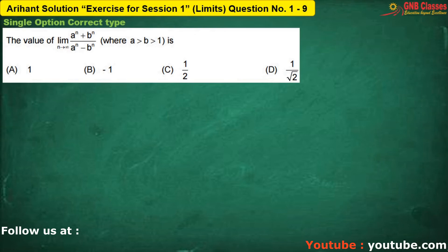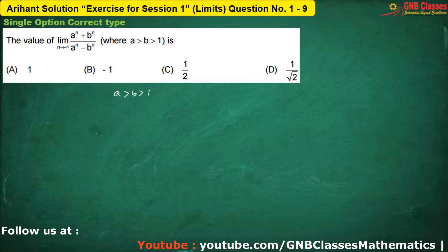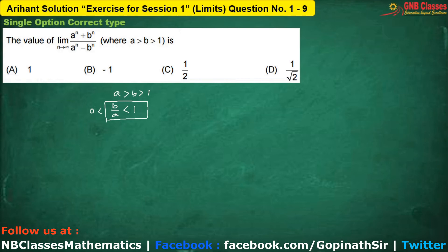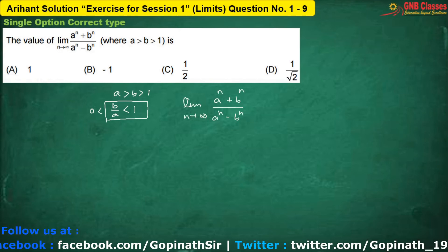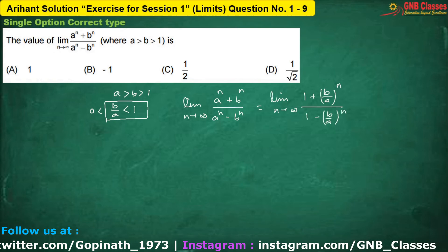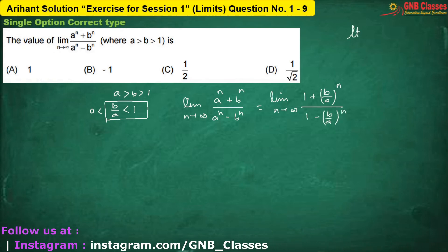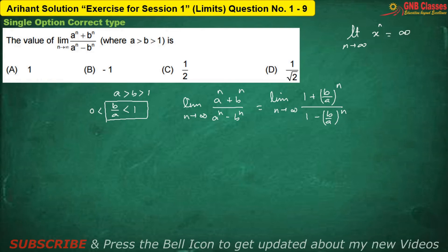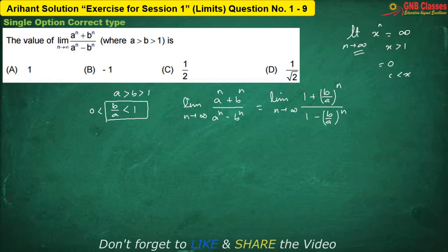In this case, we have been given that A is greater than B is greater than 1. Therefore we can say that B by A is less than 1 but definitely greater than 0. Dividing both numerator and denominator by Aⁿ, we use the fact that when limit n approaches infinity, xⁿ equals infinity if x > 1, equals 0 if 0 < x < 1, and equals 1 if x = 1.